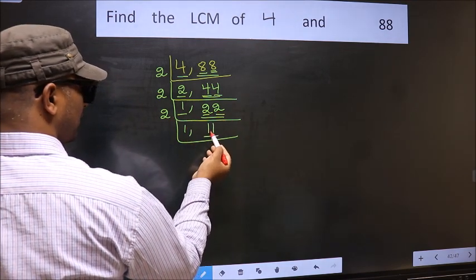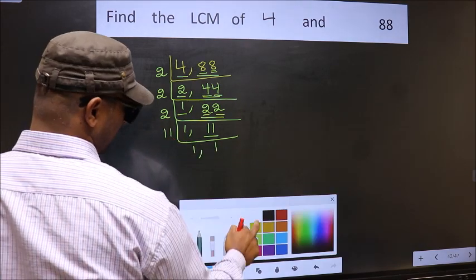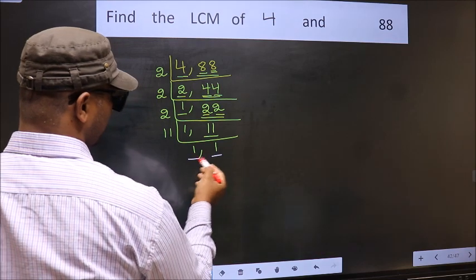Now here we have 11. 11 is the prime number. So 11 once 11. Now we got 1 in both the places.